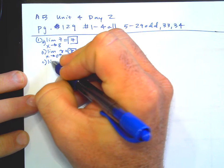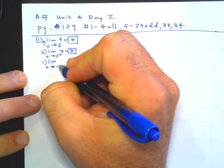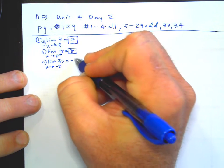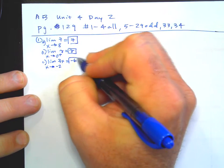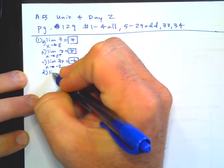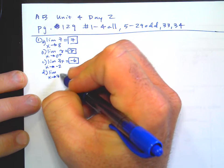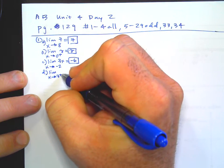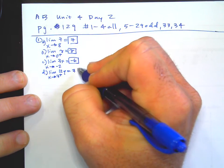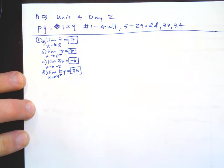Part C: limit as X approaches negative two of 3X is negative six. Part D: the limit as X approaches three from the right side, 12Y is 36. So write the problems down, write the answers, box your answers.